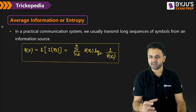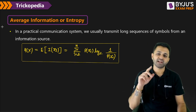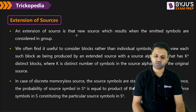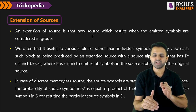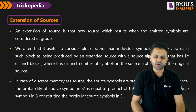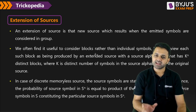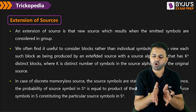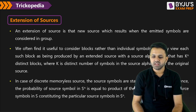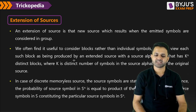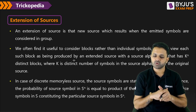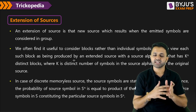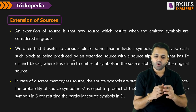Now suppose the source is extended and you want to calculate the entropy of that extended source. An extension of a source is the new source which results when the emitted symbols are considered in a group. We often find it useful to consider blocks rather than individual symbols. We may view each block as being produced by an extended source with alphabet S^n, which has k^n distinct blocks, where k is the number of distinct symbols in the original source alphabet S.